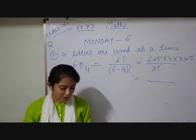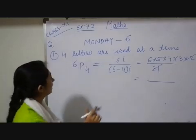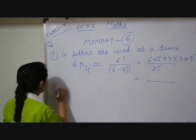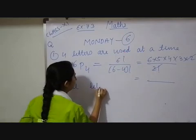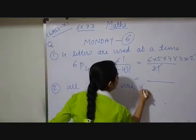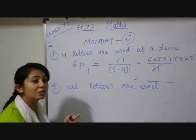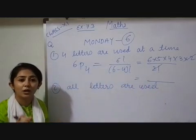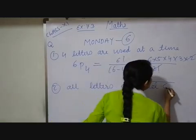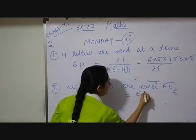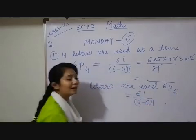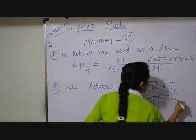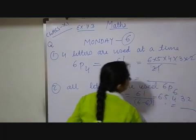Next, all letters are used at a time. All six letters. Whenever we have to do arrangement, it means we have to apply the permutation concept. So that time it will be 6P6, which is 6 factorial upon (6 minus 6) factorial. 6 minus 6 means 0 factorial, and 0 factorial equals 1. So, 6 into 5 into 4 into 3 into 2 — multiply — and you can get your answer.